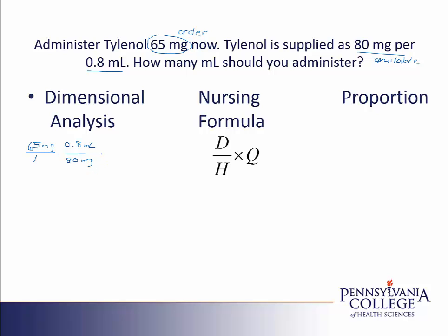Ready to do the math in my calculator? I'll take 65 times 0.8 divided by 80. I get an answer of 0.65 milliliters. I don't need to round this answer because I can measure this amount — it's under 1 ml — in a TB or 1 ml syringe, so I can keep my answer to the hundredths place.